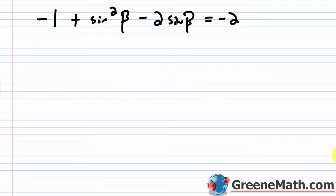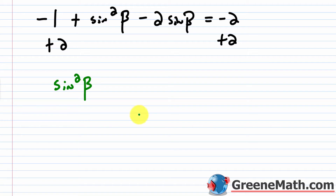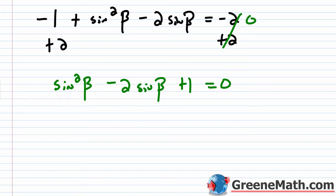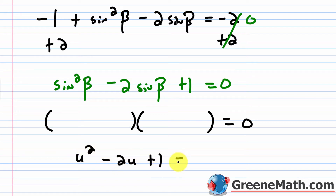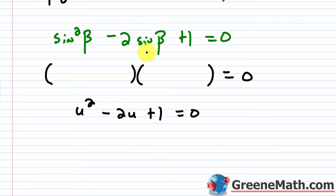We want to end up with sine of beta equal to some number. This expression is factorable — if it's quadratic in form and not factorable, you can use the quadratic formula. Adding 2 to both sides and rearranging with the squared term first gives sine squared beta minus 2 times sine of beta plus 1 equals 0. As a substitution aid, let u equal sine of beta; then it's just u squared minus 2u plus 1 equals 0.